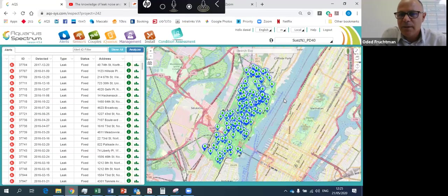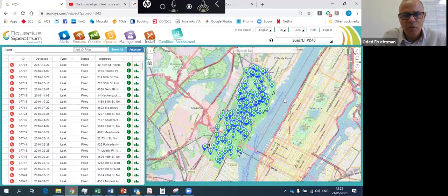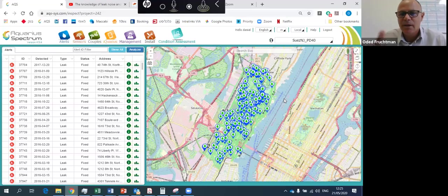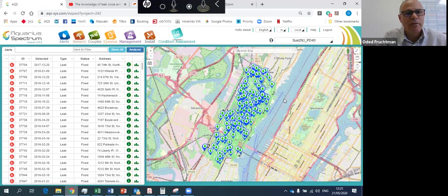The green dots is all the repairs that were found in the last four years. Some was picked up before the customer installed the Aquarius on site. And some after, we placed them on the map. And you can see on the left side, you can see all of them and the dates that they were detected and what is the address.